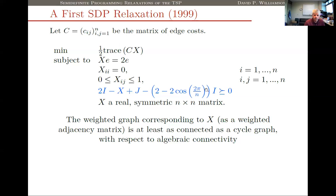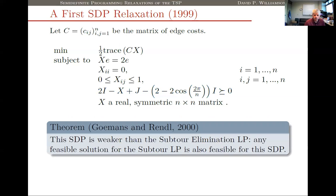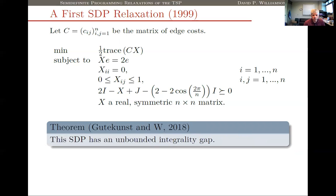Unfortunately, almost immediately after this 1999 relaxation was developed, Goemans and Rendl showed it is not very strong. In particular, any solution that's feasible for the subtour LP is also feasible for this SDP, so we don't get any better bound out of this SDP relaxation than we were getting from the subtour LP. In fact, one of the things that pops out of results I'll show you later is that this SDP has an unbounded integrality gap — for metric symmetric cost functions it's not even as good as the subtour LP.